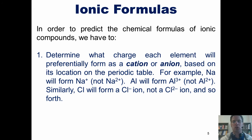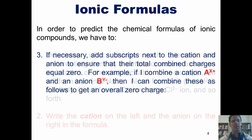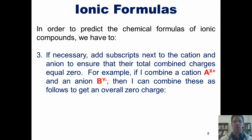One, determine what charge each element will preferentially form as a cation or anion based on its location on the periodic table. For example, sodium will form sodium plus, not sodium two plus, because it's located in column 1A of the periodic table. Aluminum, by comparison, will form aluminum three plus, not aluminum two plus, because it's in column 3A of the periodic table. Similarly, chlorine will form a Cl minus ion, or chloride anion, and not a Cl 2 minus ion, because it's in group 7A of the periodic table, and so forth. Step two, write the cation on the left and the anion on the right in the formula. And step three, if necessary, add subscripts next to the cation and anion to ensure that their total combined charges equal zero.